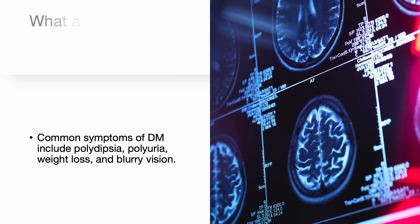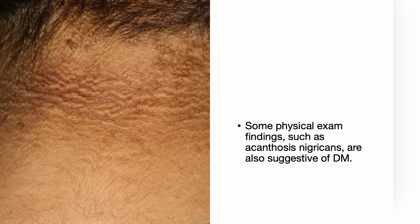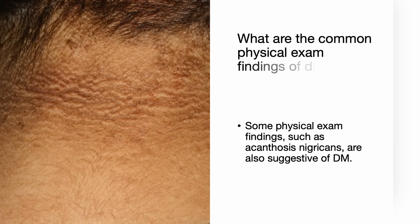What are the common symptoms of diabetes? Common symptoms include polydipsia, polyuria, weight loss, and blurry vision. Some physical findings, such as acanthosis nigricans, are also suggestive of diabetes.